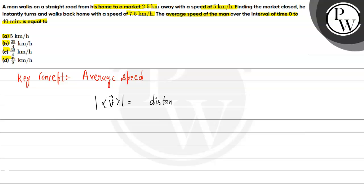The man walks from his home to the market. Here is your home, and here is the market. It's 2.5 km away with a speed of 5 km per hour. So how much time will it take?